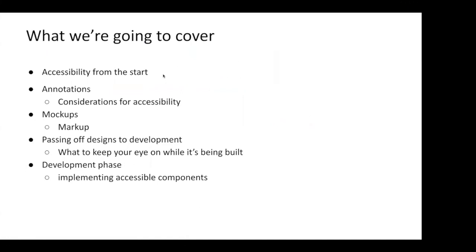What we're going to cover today is how we can incorporate accessibility from the start — all the way from ideation through the design phase through the development phase. Specific to the design phase, we'll go over annotations and the considerations you must make for accessibility, how those map to mock-ups, and how certain annotations can drive the output markup the developer will implement. We'll also go over passing off designs to the development team and then transition into implementing accessible components and testing for accessibility.